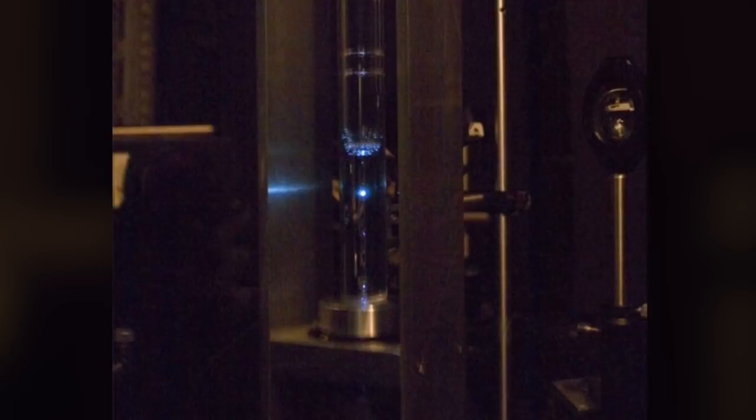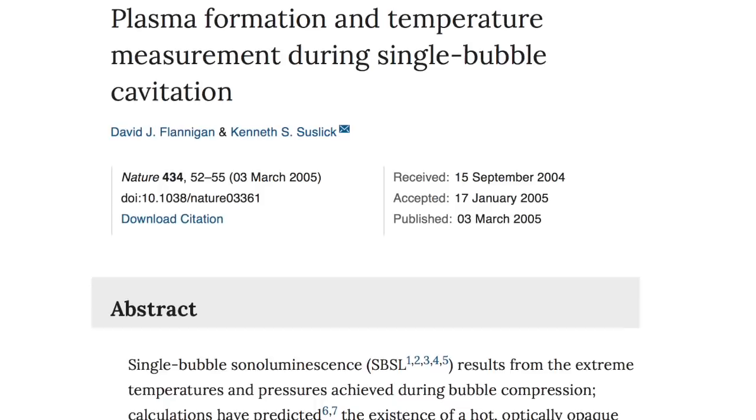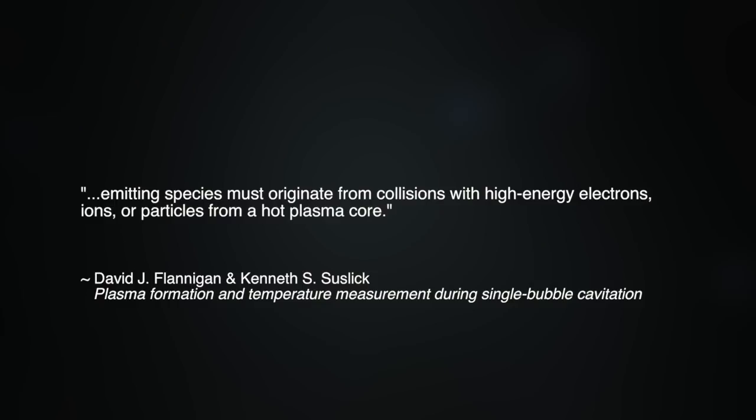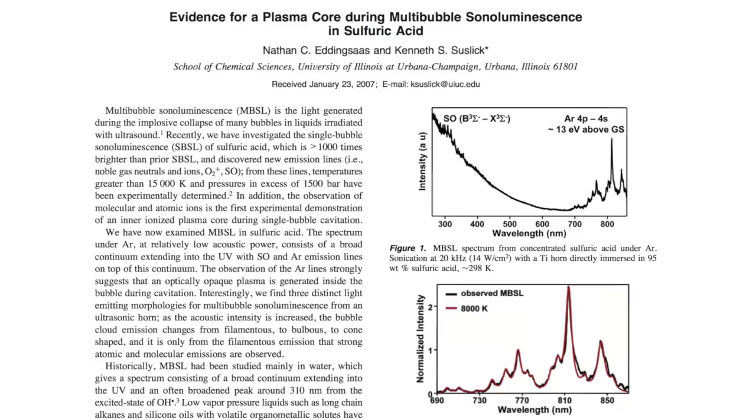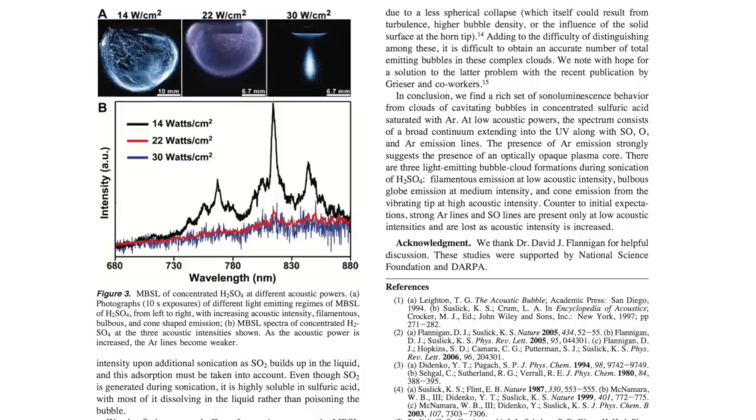Some researchers believe that during sonoluminescence, bubbles have an inner core of plasma. In a study published in peer-reviewed journal Nature, entitled Plasma Formation and Temperature Measurement During Single Bubble Cavitation, researchers state that, quote, emitting species must originate from collisions with high-energy electrons, ions, or particles from a hot plasma core. Other research supports the hypothesis that sonoluminescence bubbles have a hot plasma core. According to another recent publication called Evidence for a Plasma Core During Multi-Bubble Sonoluminescence in Sulphuric Acid, the observation of molecular and atomic ions is the first experimental demonstration of an inner ionized plasma core during single-bubble cavitation.